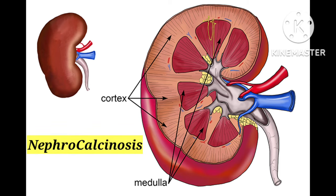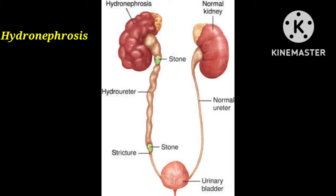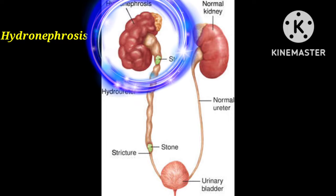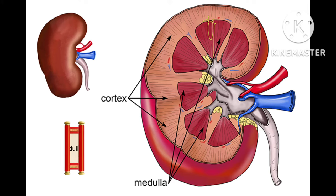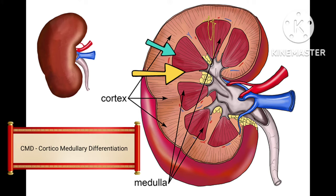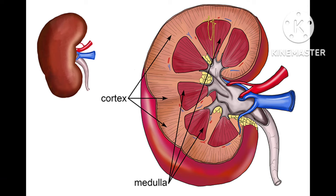Another common term is hydronephrosis — the swelling of the kidney due to blockage of urine. When urine is blocked, the kidney swells, and this condition is called hydronephrosis. The report also mentions CMD — corticomedullary differentiation — describing how the cortex and medulla are differentiated. If CMD is present, it is a normal condition. If CMD is absent, kidney problems can be suspected.